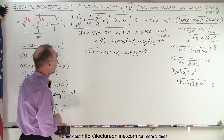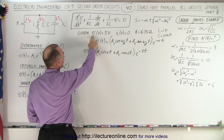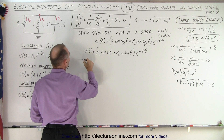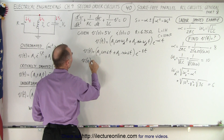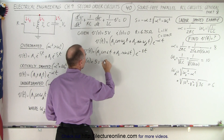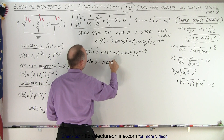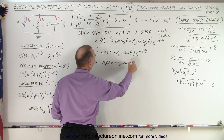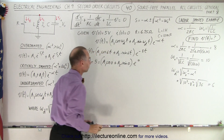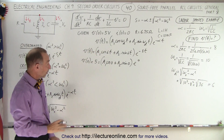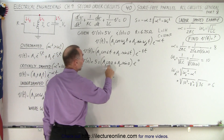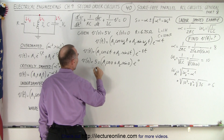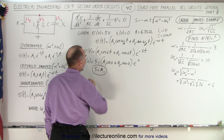Starting with the initial condition that voltage is 5 volts when t equals 0: plugging in t=0 gives 5 equals A1 times cosine(0) plus A2 times sine(0), times e to the 0. Since sine(0) equals 0 and cosine(0) equals 1, and e to the 0 equals 1, we get 5 equals A1. So A1 equals 5.